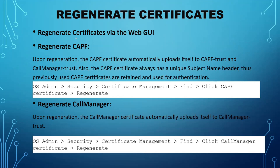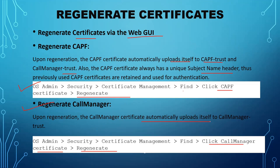To regenerate CAPF via the web GUI: upon regeneration, the CAPF certificate automatically uploads itself to CAPF-trust and call manager-trust. Go to OS Admin, Security, Certificate Management, find the CAPF certificate, and click Regenerate. To regenerate call manager, do the same — click the call manager certificate and regenerate. The call manager certificate automatically uploads to call manager-trust as well.